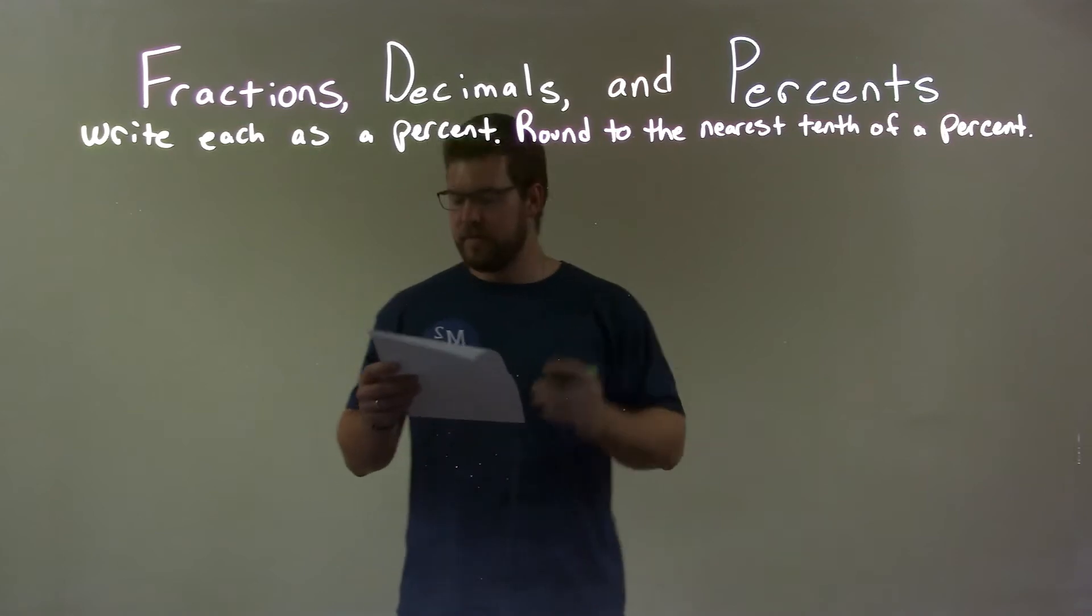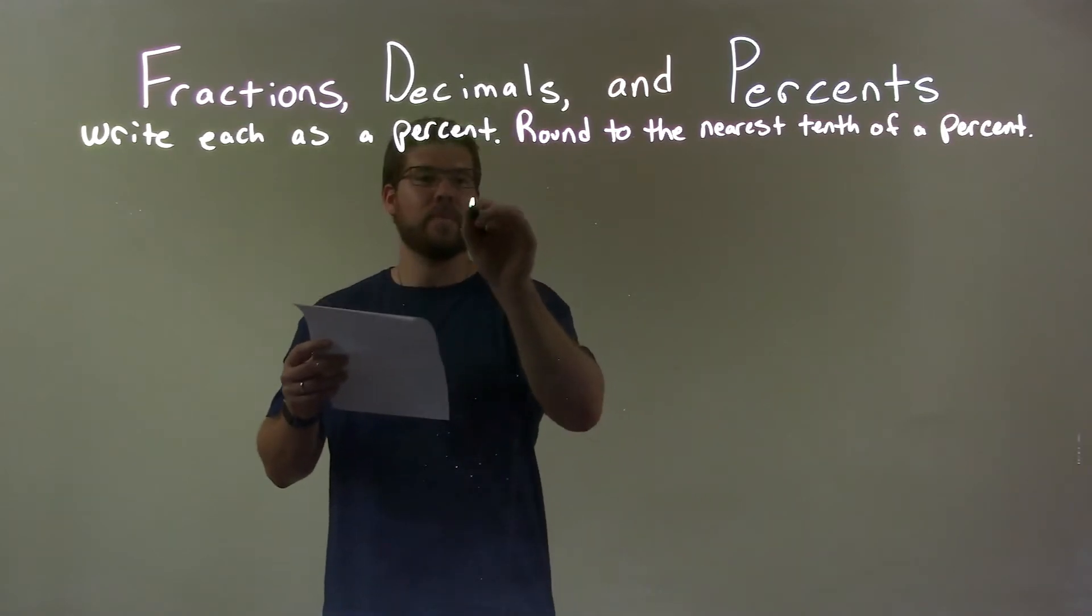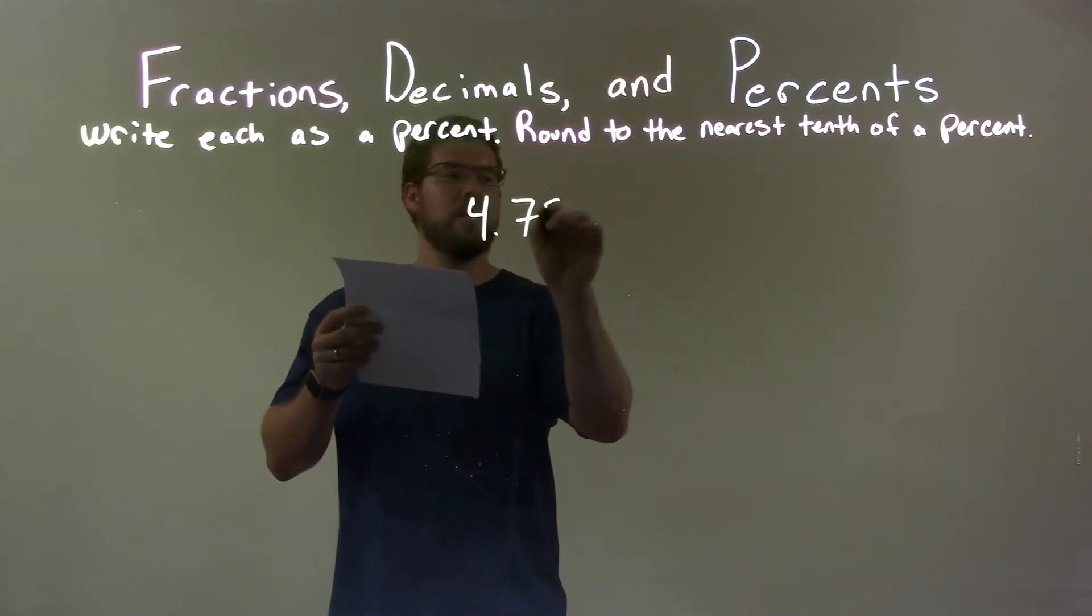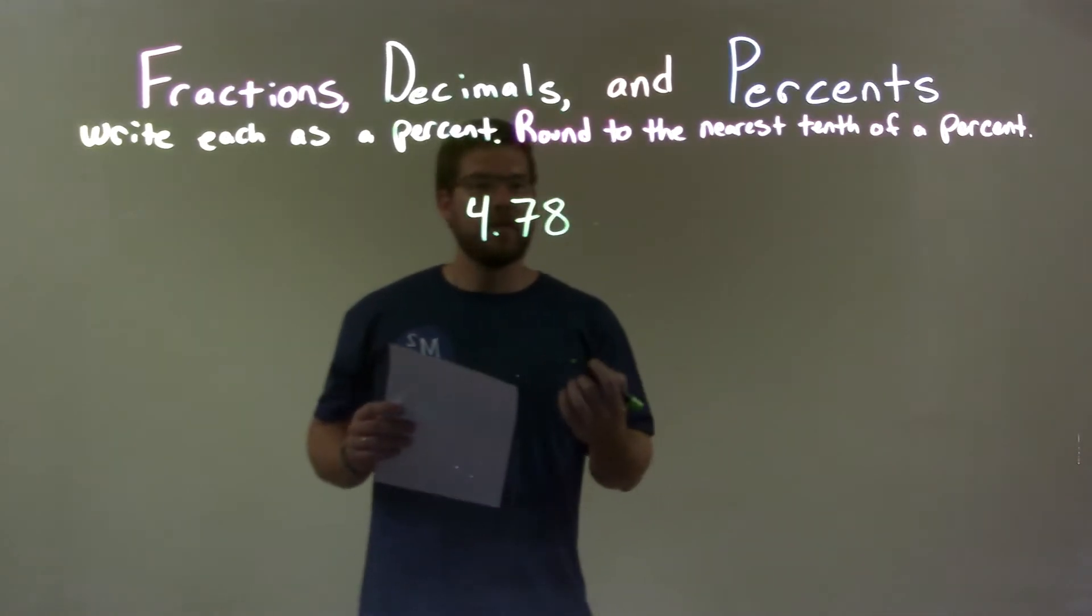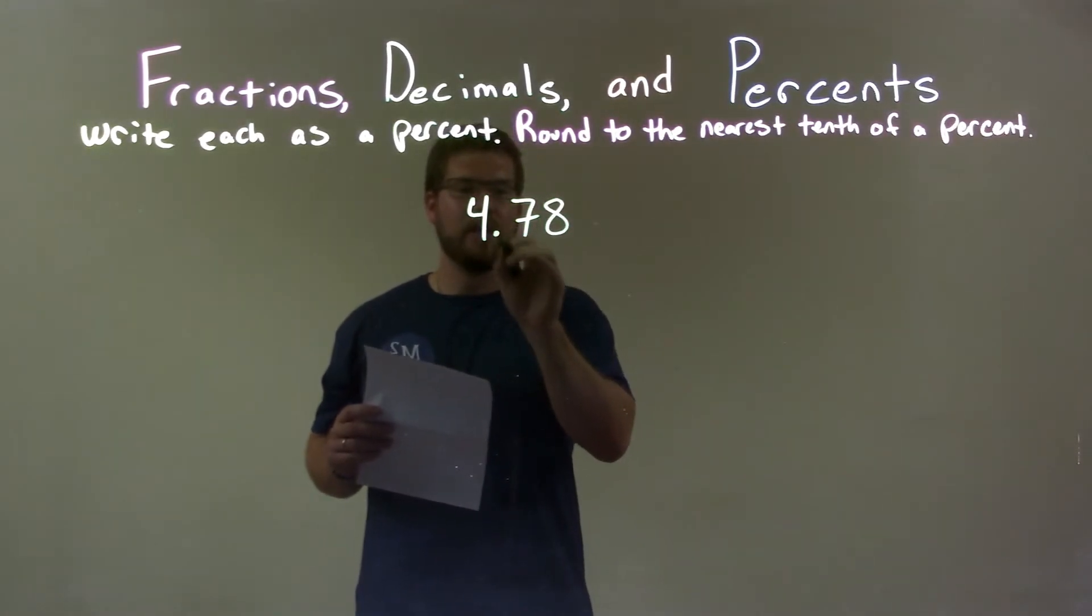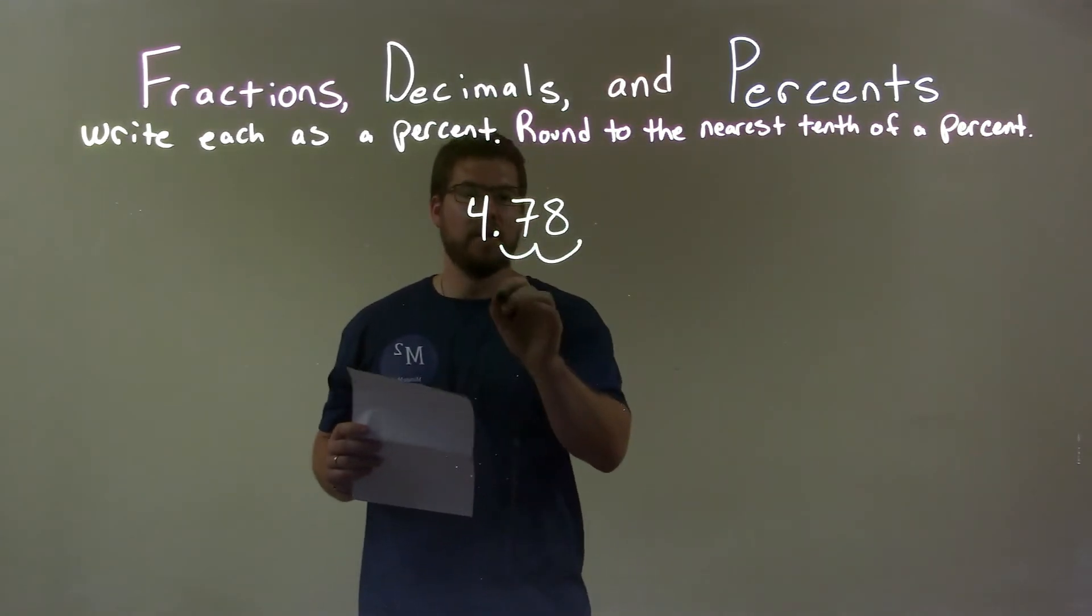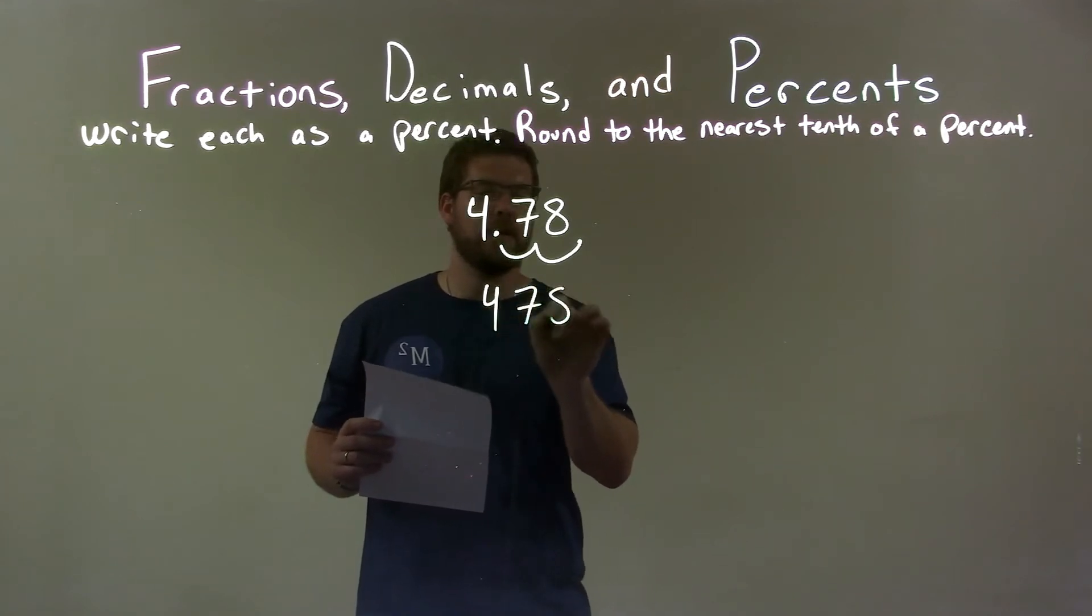So, if I was given this decimal, 4.78, to write this as a percent I take this decimal place and I have to move it two spots to the right. So 4.78 becomes 478.